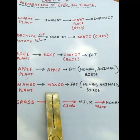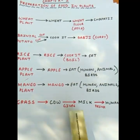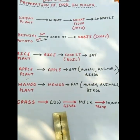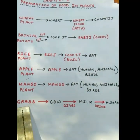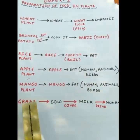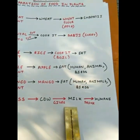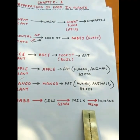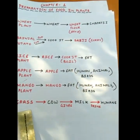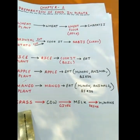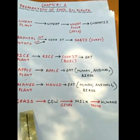You also drink milk. How do you get milk? You get milk from a cow. And what does the cow eat? The cow eats grass. Grass is also a plant. The grass is eaten by the cow, then the cow gives you milk, and we humans drink that milk and get energy. So you see, animals also get their food from plants. Everybody — animals and humans — is getting their food from plants.